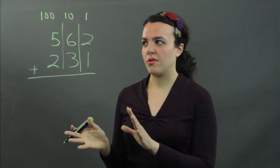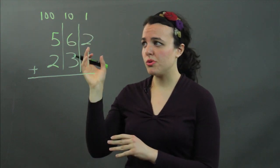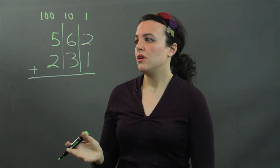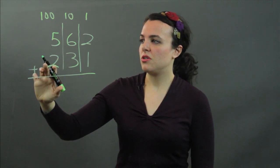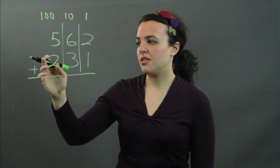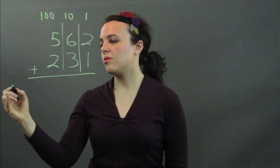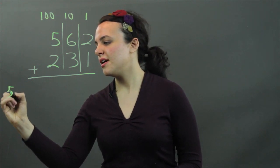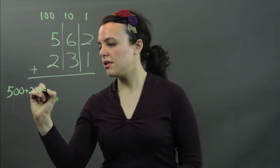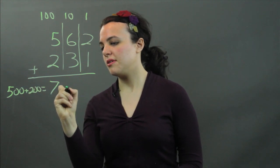What we do in this format is we start on the left-hand side. We start first by adding the hundreds. So, when I look at this five and this two, note that this is really 500, and this is really 200. So, I'm going to add 500 plus 200 equals 700.